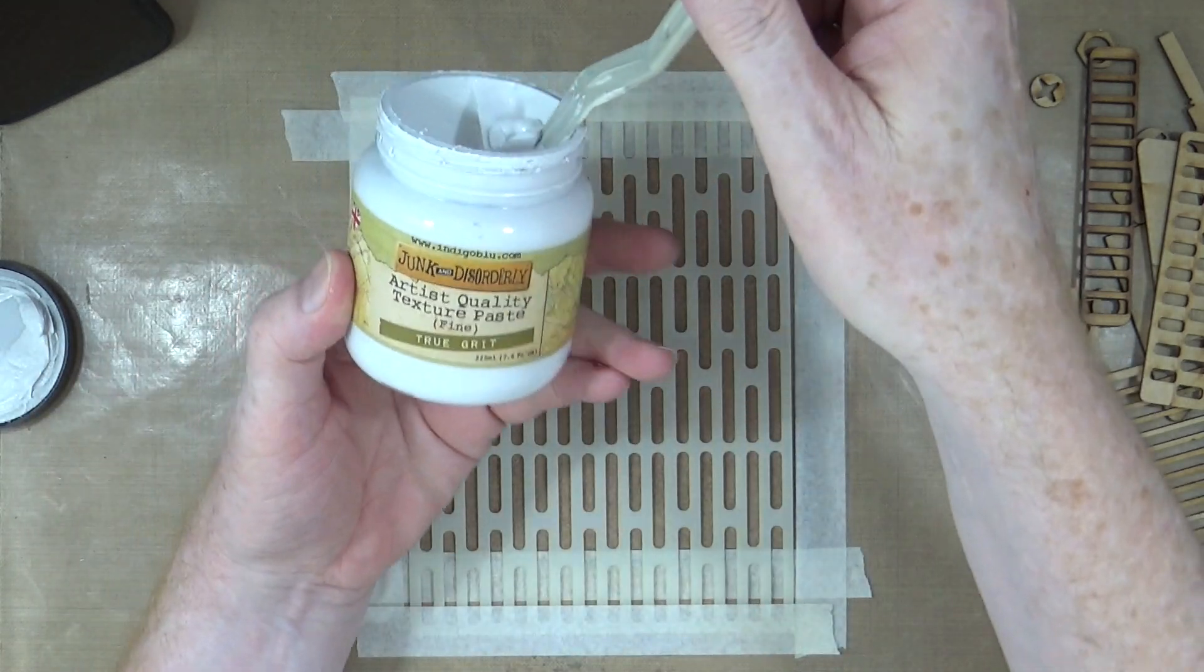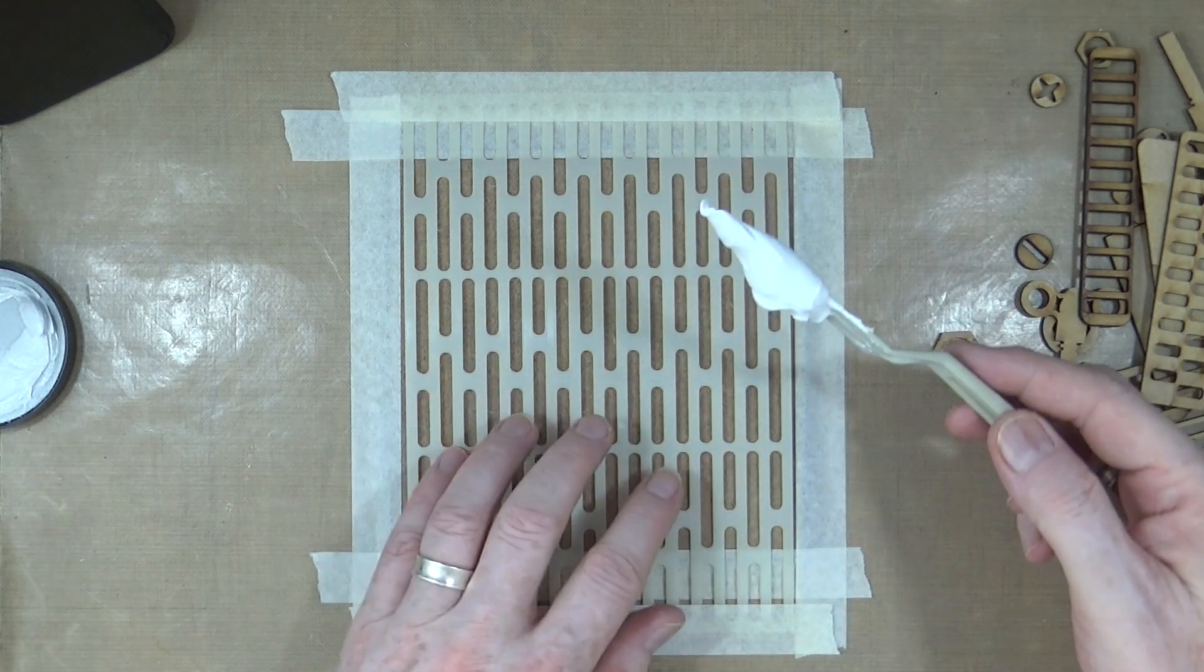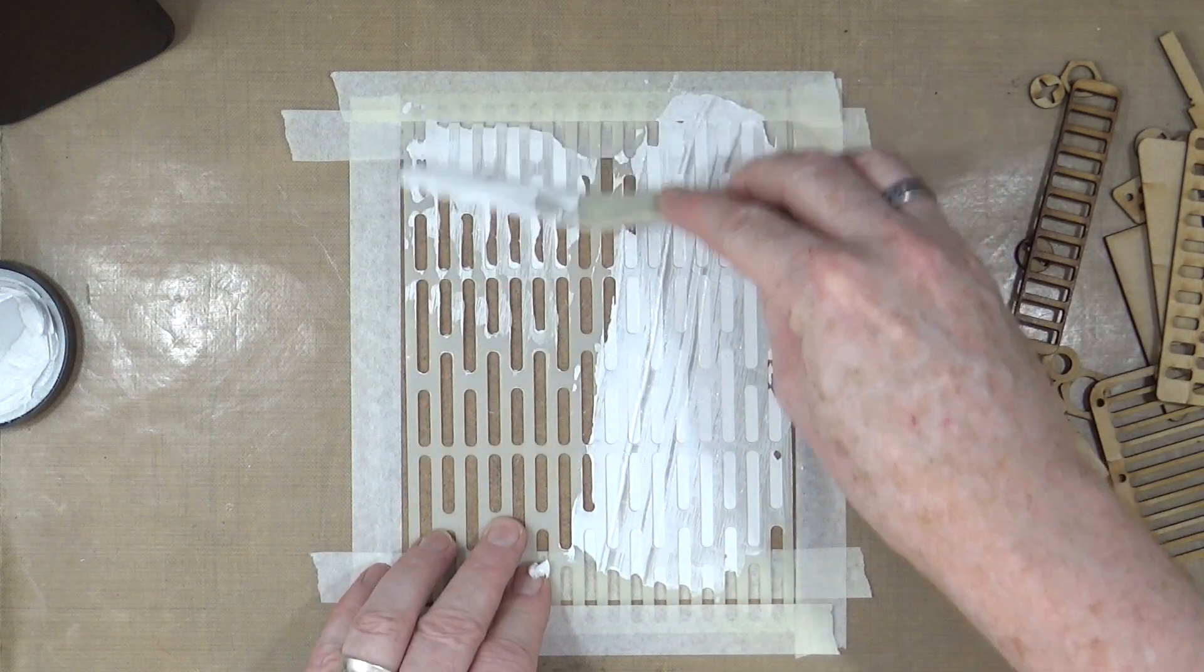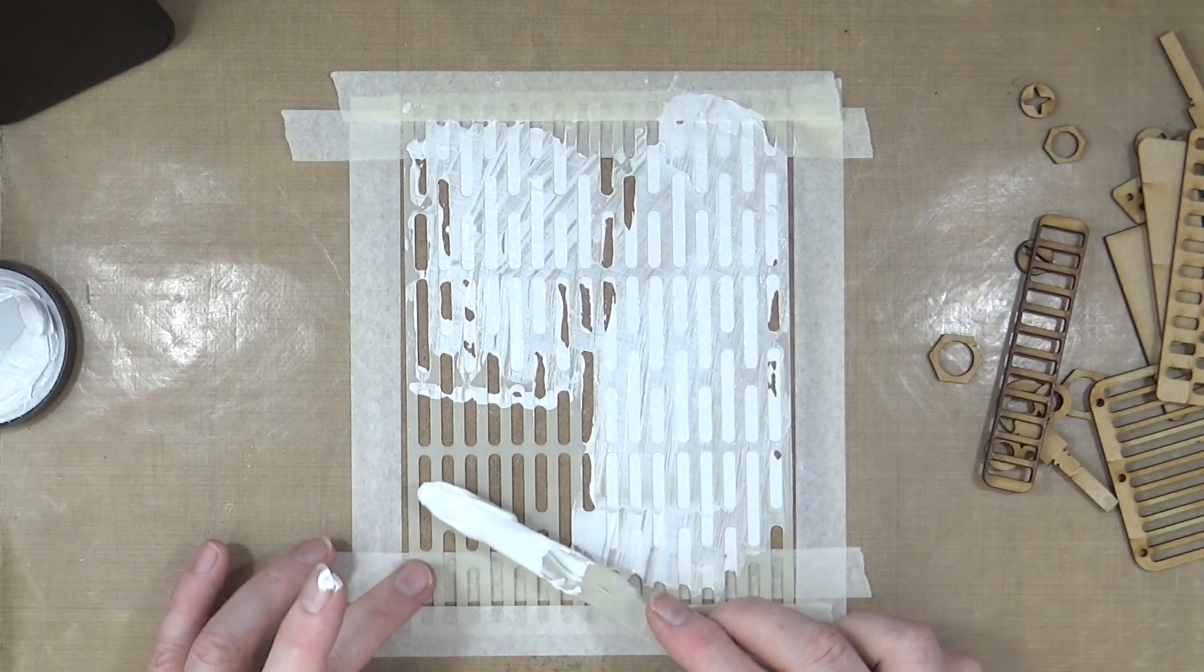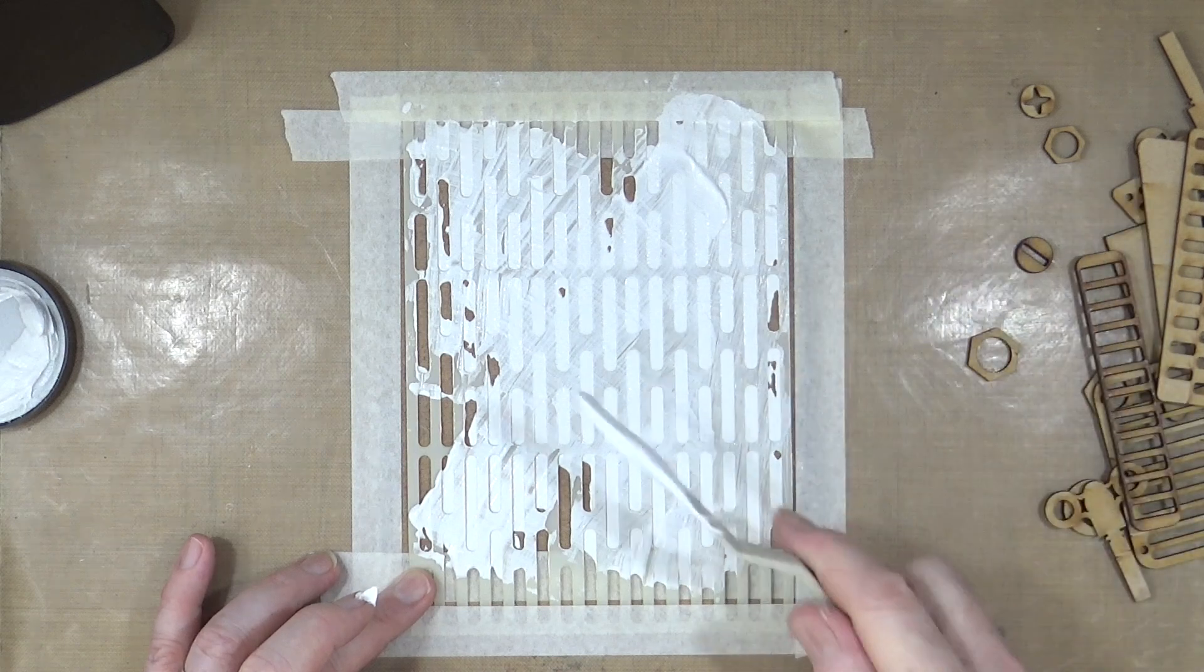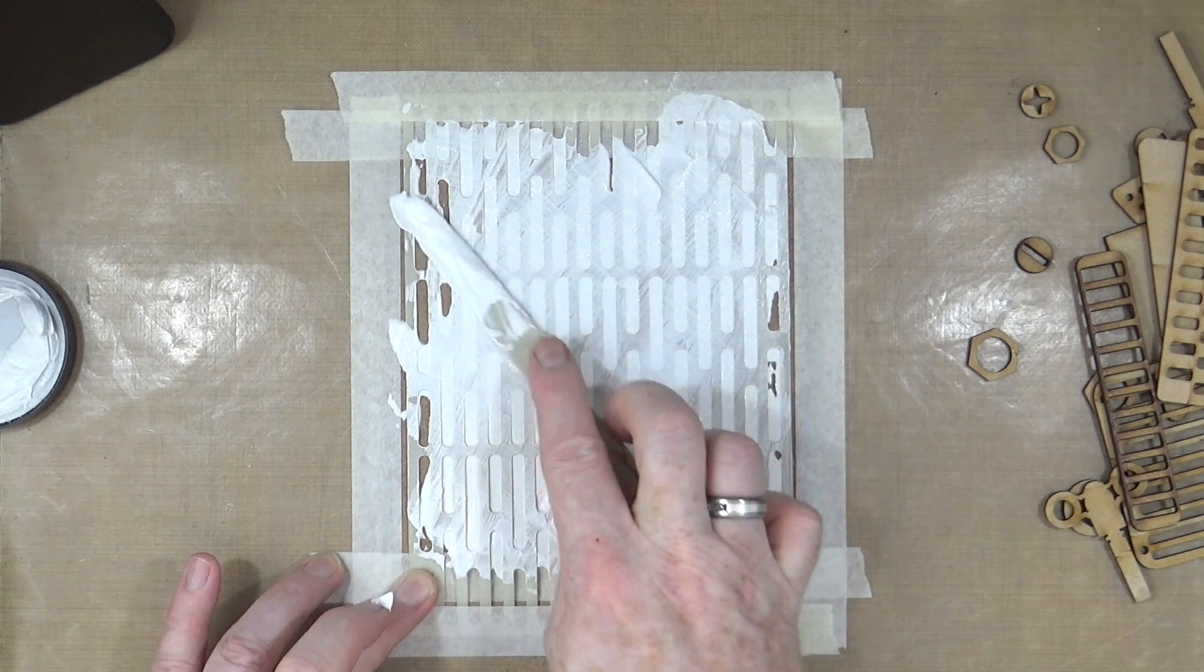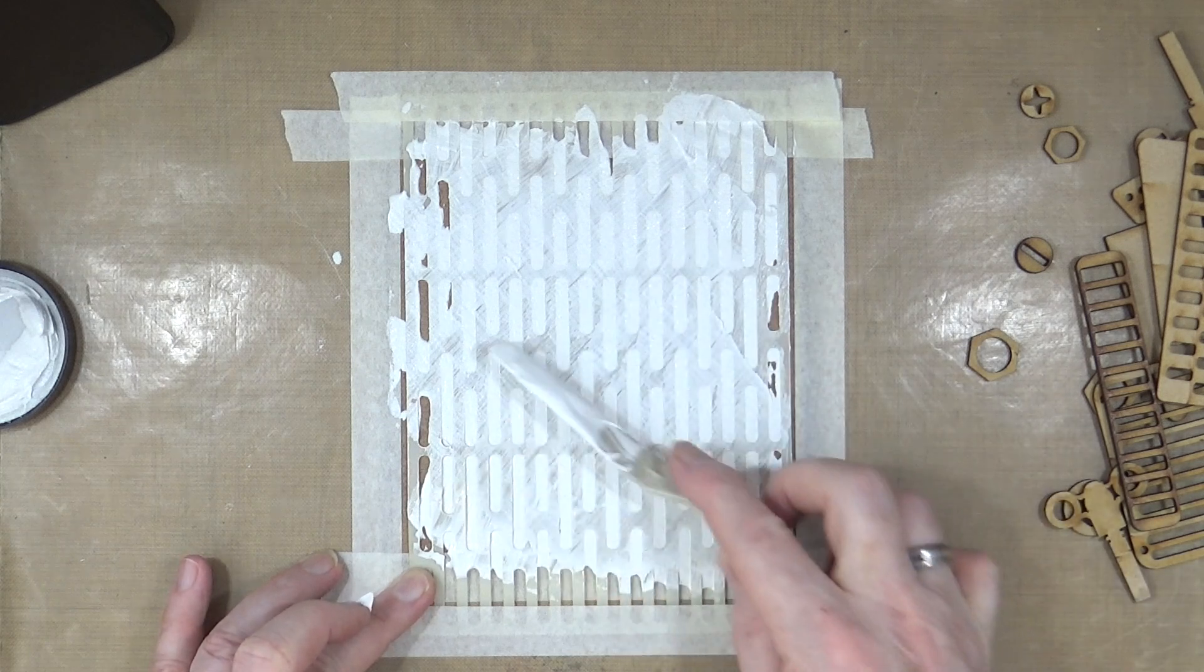I've got some True Grit texture paste, it's very fine and I'm just going to drop that down and then just scrape it through. I'm not particularly bothered about a perfect and even coating because it's going in the background. I'm going to be building on top of this so it's just going to add additional texture in the background, invisible texture. The stuff that you see but you don't see. That'll do.